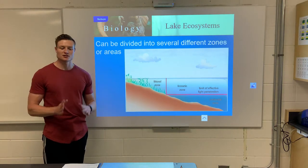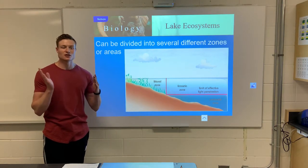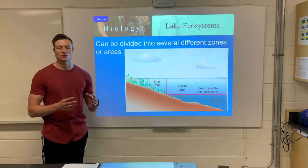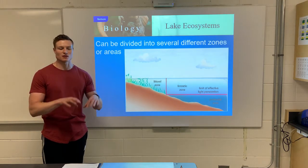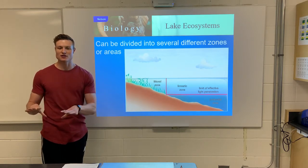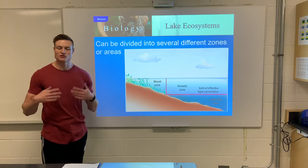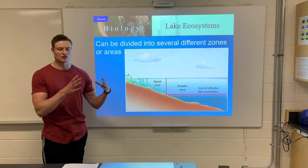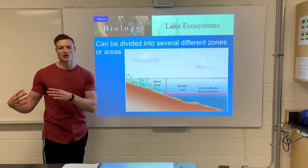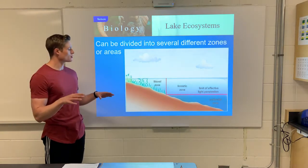Just like there are different types of terrestrial biomes with ecosystems within them, the same thing can be said for aquatic ecosystems. There are two main aquatic biomes: the saltwater marine biome and the freshwater biome. Within these biomes we can have different ecosystems.